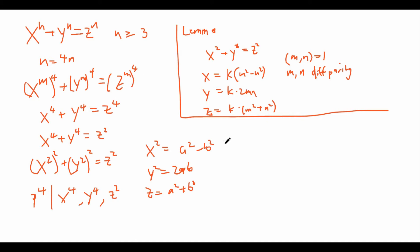Note that a² − b² and 2ab are interchangeable since x and y are symmetric in the equation. So without loss of generality we assume x² = a² − b² and y² = 2ab, and z = a² + b². Now, the most interesting equation is the first one: rearranging gives x² + b² = a², which is exactly the same format as our lemma. So we're going to apply the lemma again.